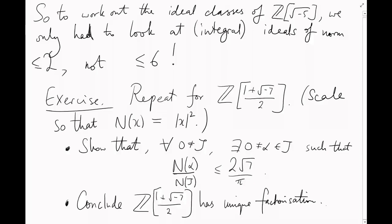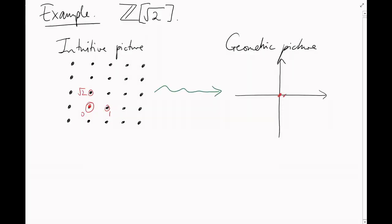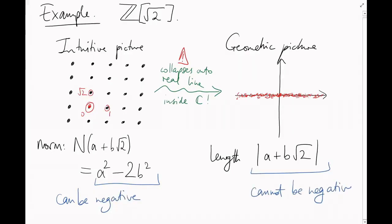In both of these cases, we've used the fact that our additive lattice can be nicely embedded into the complex plane. But we've seen an example before where this isn't true. If you try and embed Z adjoin root 2 into the complex plane, well, it ends up collapsing onto the real line. And the norm function, which sends a plus b root 2 to a squared minus 2b squared, can't be turned into the square of a magnitude function by some clever stretching, because it can take negative values.